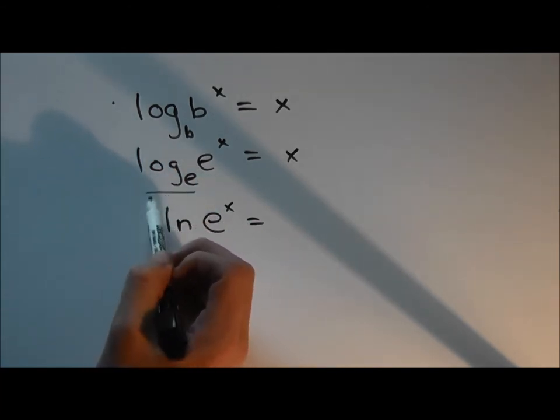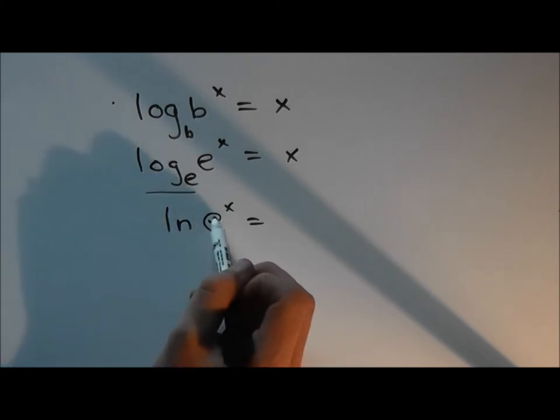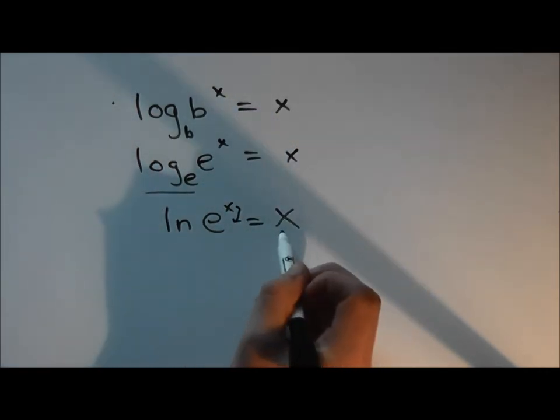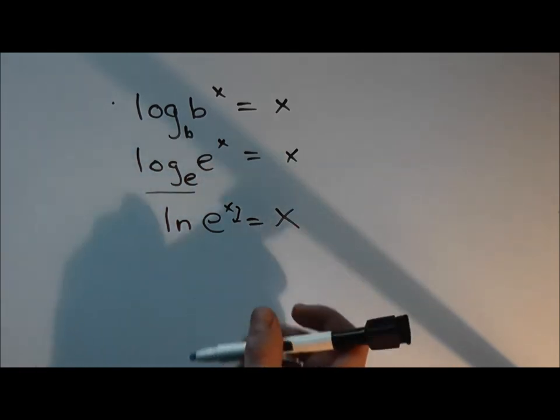And by doing this, we can eliminate our Euler's Constant and bring down x and k. And therefore, this occurs, allowing us to solve for k.